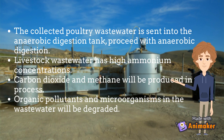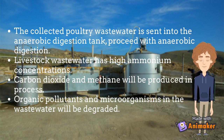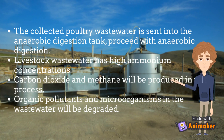Methane produced is channeled to the power plant, whereas carbon dioxide produced is channeled to the photobioreactor. Organic pollutants and microorganisms which are harmful to algal growth are degraded. The agitator ensures that flocculation can be carried out in the shortest time.